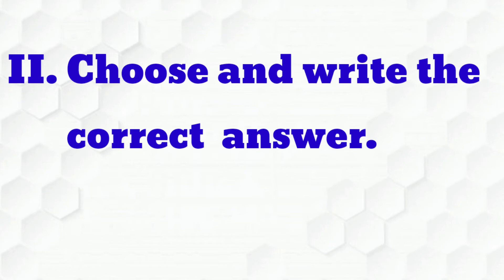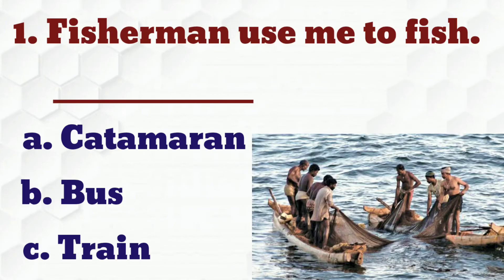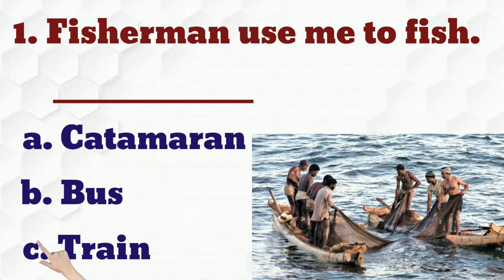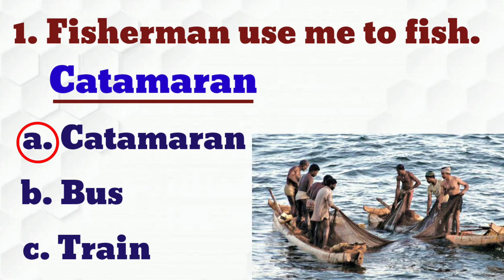Exercise 2: Choose and write the correct answer. Students, let's see the first question: 'Fisherman, use me to fish.' The options are A. Kattamaran, B. Bus, C. Train. Which is the correct answer? A. Kattamaran. Very good. So we have to write Kattamaran.